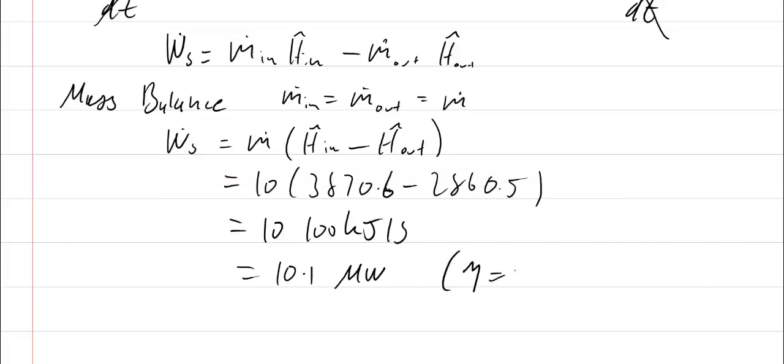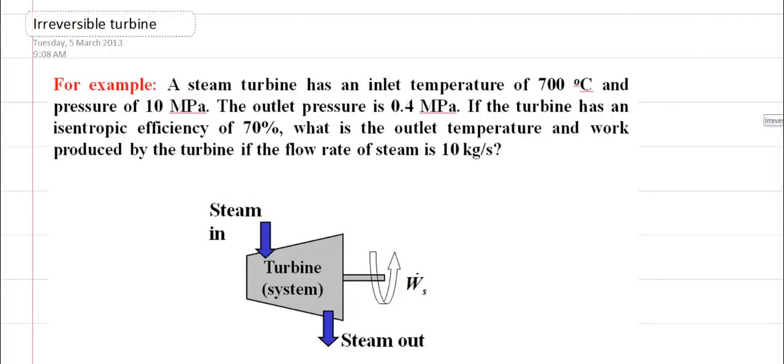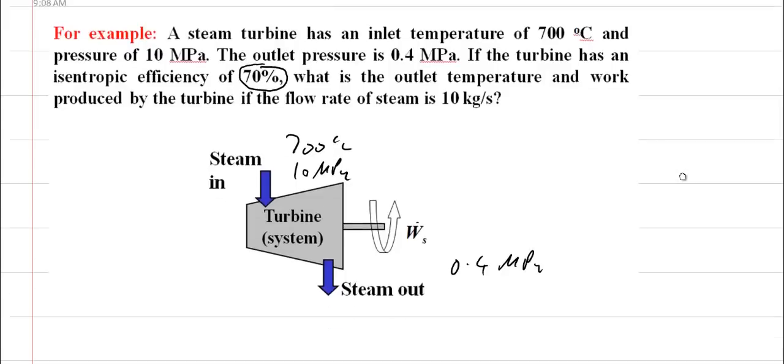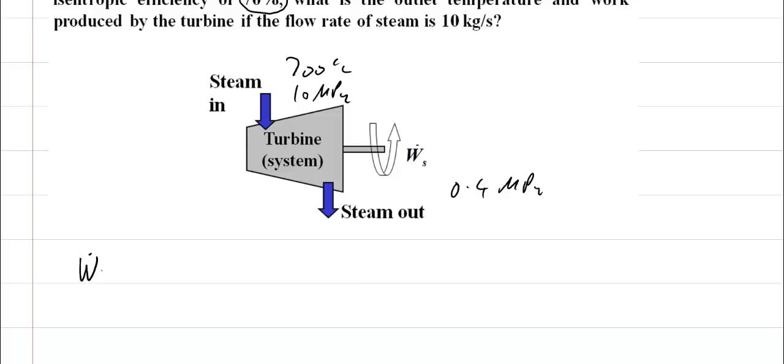That of course is for an isentropic efficiency equal to one. For the case where we don't have a reversible turbine, the next example is for an irreversible turbine. It's the same turbine, same inlet conditions, same outlet pressure. The difference is that we now have an efficiency term.